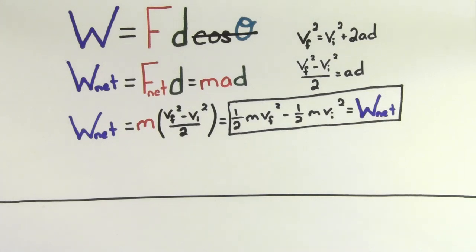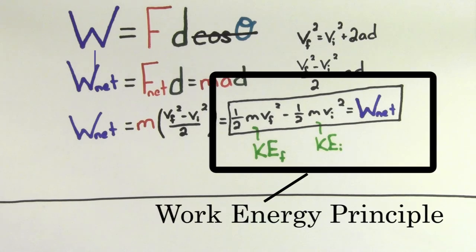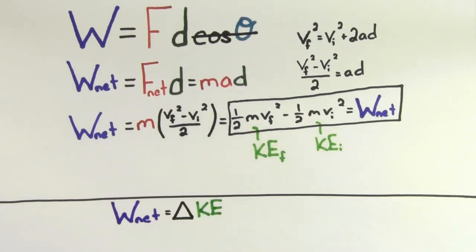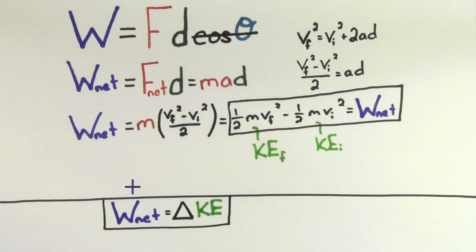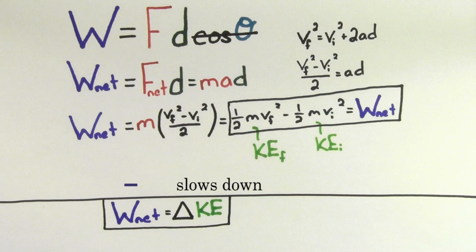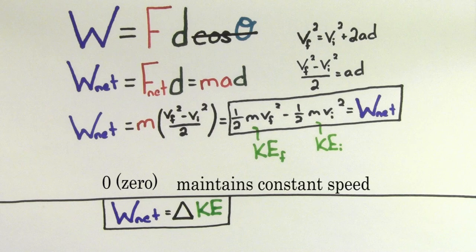The quantity one-half M times V squared is what we call the kinetic energy of the object. So the net work done on an object equals the change in the kinetic energy of that object. This expression is often called the work-energy principle, since it relates the net work done on an object to the kinetic energy gained or lost. If the net work done is positive, the kinetic energy increases and the object speeds up. If the net work done is negative, the kinetic energy decreases and the object slows down. And if the net work done is zero, the kinetic energy stays the same, meaning the object maintains a constant speed.